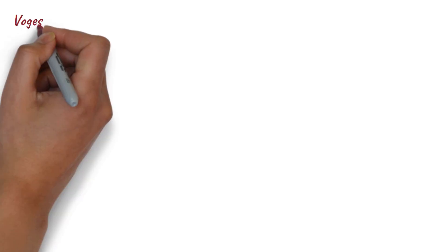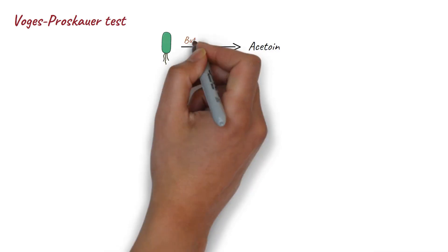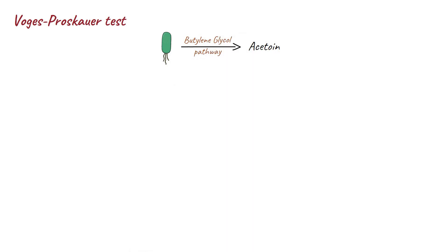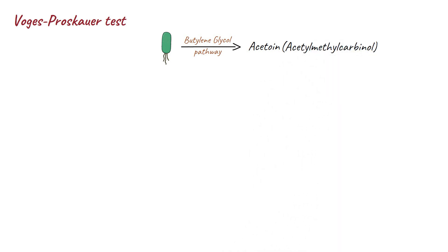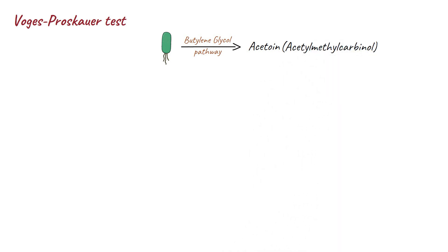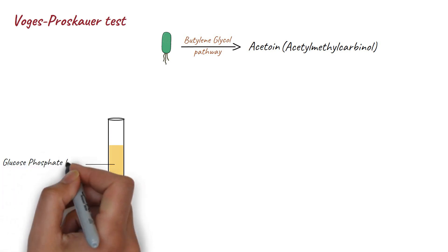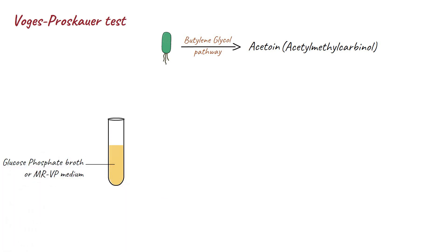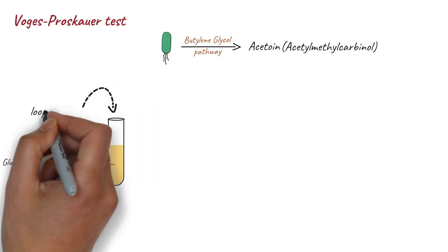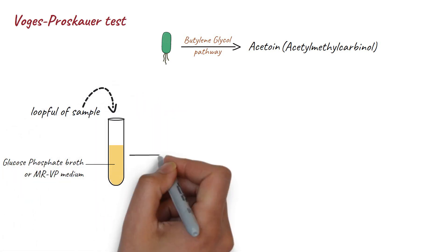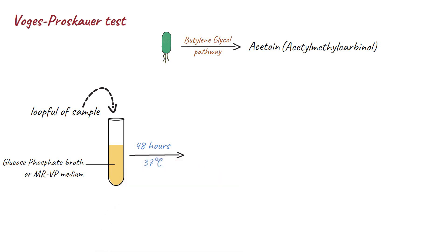The purpose of the Voges-Proskauer test is to determine the ability of bacteria to produce acetoin, which is an intermediate product in the butylene glycol pathway. Acetoin is also known as acetylmethylcarbinol. To perform this test, take a test tube containing glucose phosphate broth or MRVP medium. Inoculate the tube with a loopful of sample and incubate for 48 hours at 37 degrees Celsius.